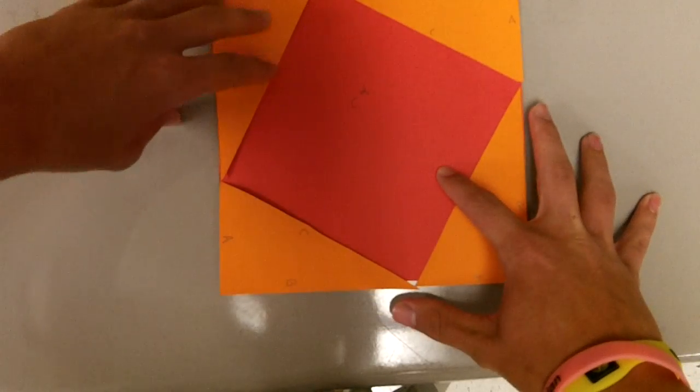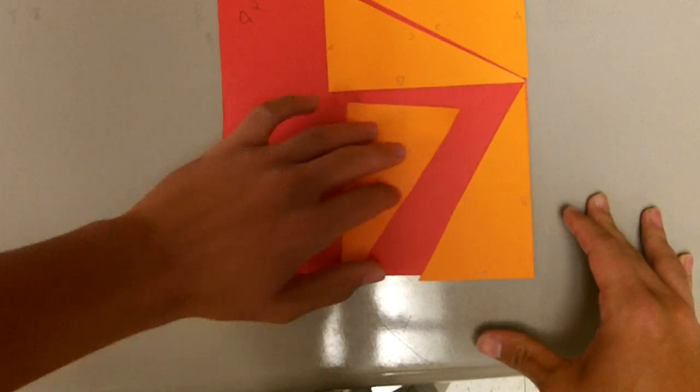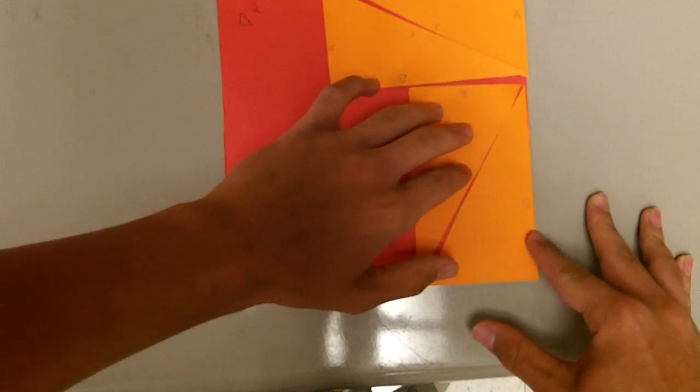If you move this right here and this right here, the triangle sizes stay the same, they just move into a different position.